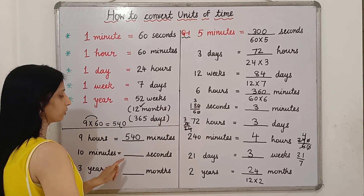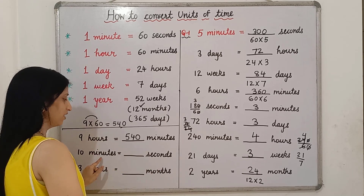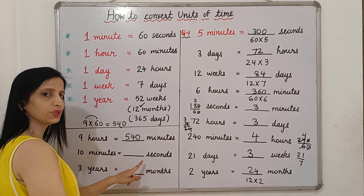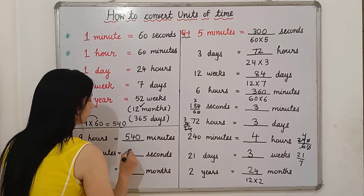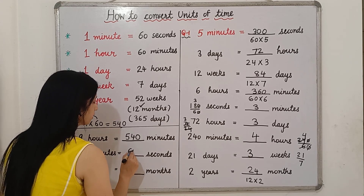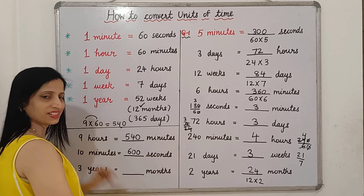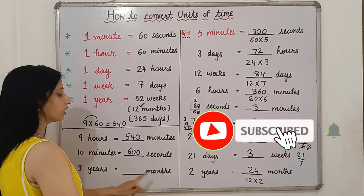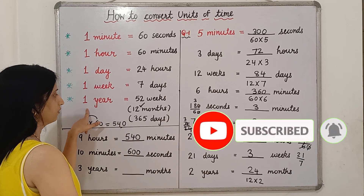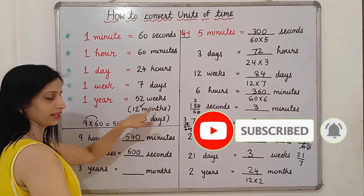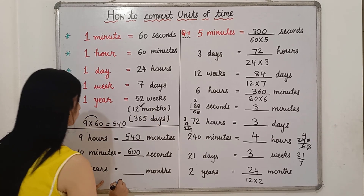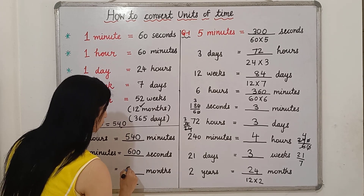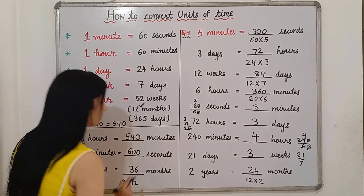10 minutes is equal to how many seconds? In 1 minute there are 60 seconds, so in 10 minutes it is 10 multiplied by 60, giving us 600 seconds. Next: 3 years is equal to how many months? In 1 year there are 12 months, so in 3 years it will be 3 multiplied by 12, which is 36 months.